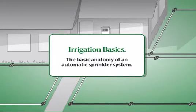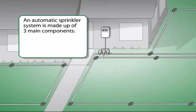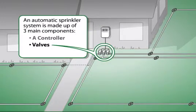Let's take a look at the basics of an automatic sprinkler system. It's made up of three main components: a controller, valves, and sprinklers.